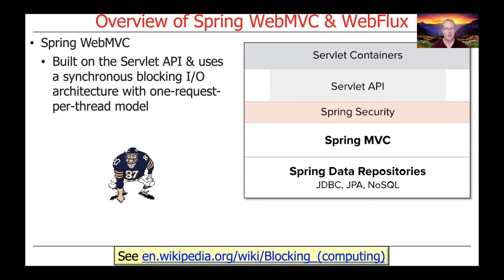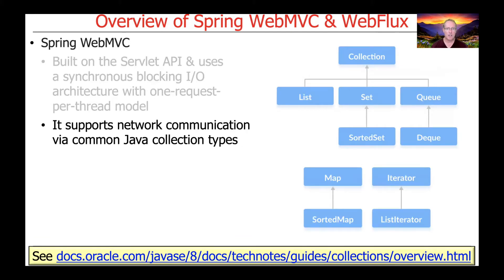Spring WebMVC is built atop the Servlet API and uses synchronous blocking I/O with a one request per thread model. If you're a client and you invoke the operations, there'll typically be a blocking call on the client side waiting to get the results back from the server side. Communication works across the network using common Java collection types — things like lists and maps.